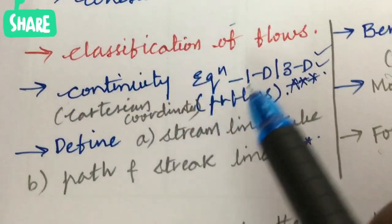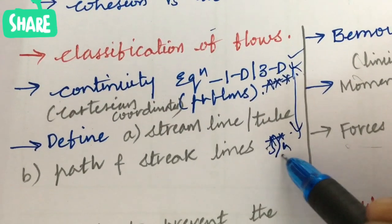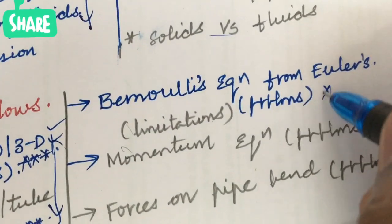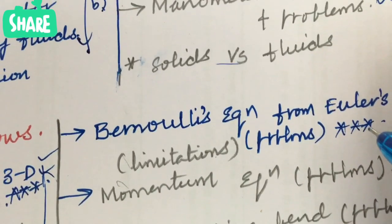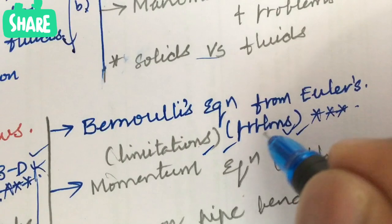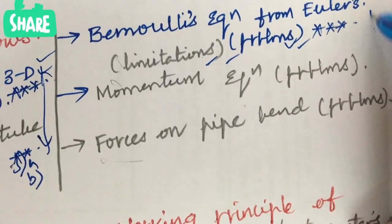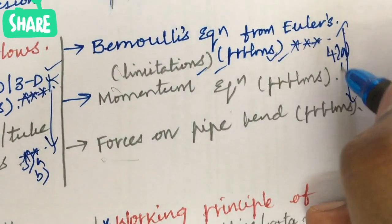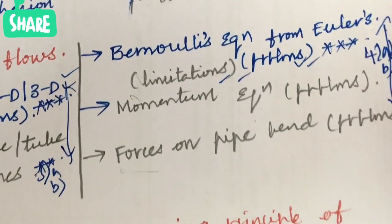The derivation and problems related to the continuity equation may be the 3A and 3B questions. The much-awaited and very important question is the derivation of Bernoulli's equation from Euler's equation of motion, along with problems on it, as well as limitations. The momentum equation and problems on forces on a pipe bend are also one of the very important gunshot questions, asked from 4A and 4B — that is, from the second unit.